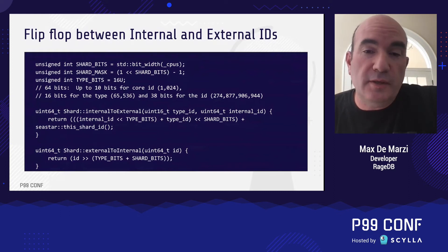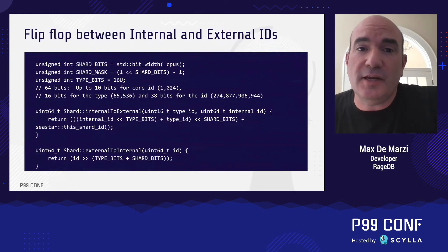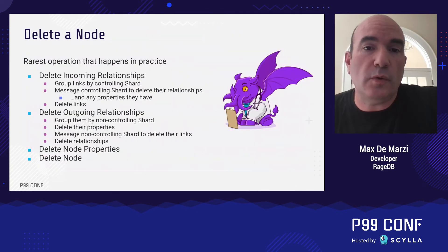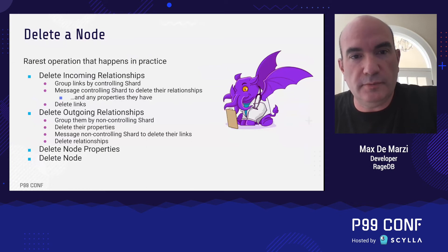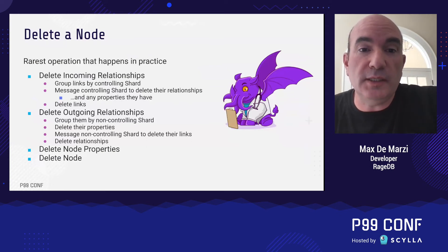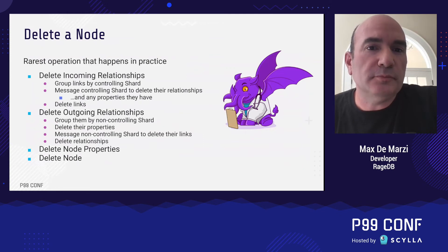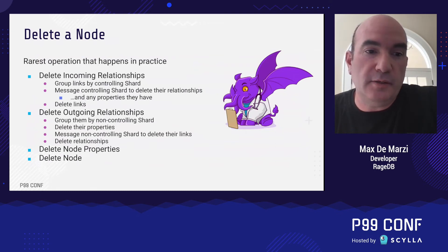The worst thing you can do in a graph database is delete a node — it's as much fun as getting a colonoscopy. It's a rare operation but requires a lot of coordination. You have to message the shards controlling incoming relationships and delete them and their properties, delete your outgoing relationships, message shards with copies of those outgoing links to delete them too, then delete the actual node and its properties. If you want to see an example of heavy shard coordination using the Seastar framework, look at the node deletion methods in the graph.